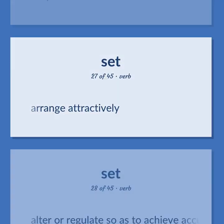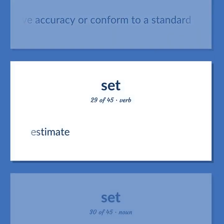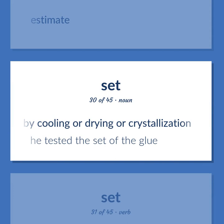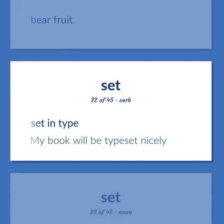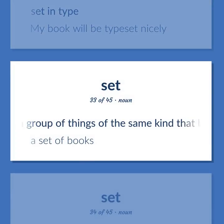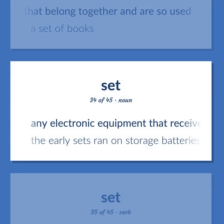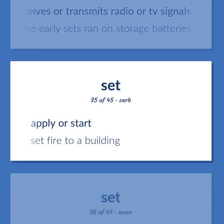Set: Arrange attractively. Alter or regulate so as to achieve accuracy or conform to a standard. Estimate. The process of becoming hard or solid by cooling or drying or crystallization. He tested the set of the glue. Bare fruit. Set in type. My book will be typeset nicely. A group of things of the same kind that belong together and are so used. A set of books. Any electronic equipment that receives or transmits radio or TV signals. The early sets ran on storage batteries. Apply or start. Set fire to a building.